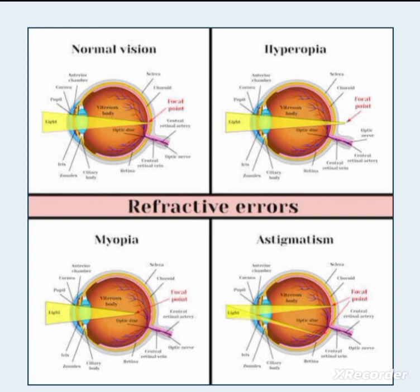In case of myopia, the image is formed in front of the retina, so the patient will have difficulty seeing far objects. In case of astigmatism, the image is formed in different parts of the retina, so the person is not able to visualize things properly and it will appear as a blurred image.